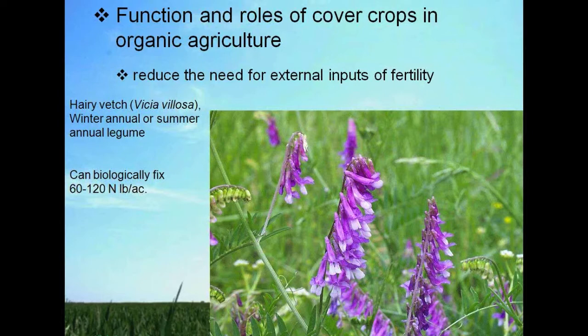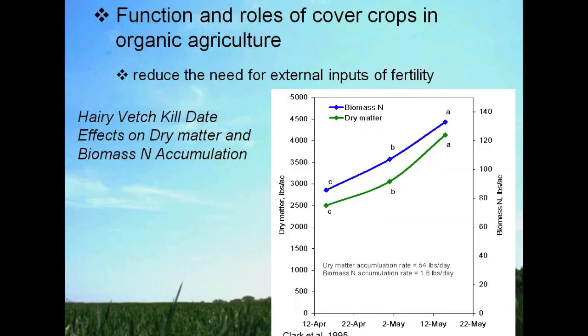We see a date-dependent accumulation of both biomass and dry matter. Between April and May — times when normally in a crop rotation we may not have a cash crop in the system — cover crops fill a niche that might not otherwise be taken advantage of. We're accumulating a large amount of nitrogen and dry matter during this time, pointing out how cover crops can fit into niches within farming systems.